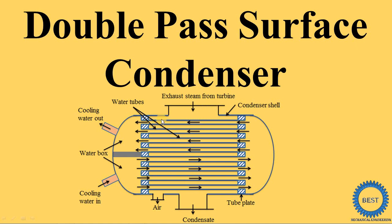Now, what is the double pass? The cooling water is moved from the water box through the tubes — this is called one pass — and from there it is passed again back from the top of the condenser. It is called double pass because water passes through the entire length of the condenser two times.